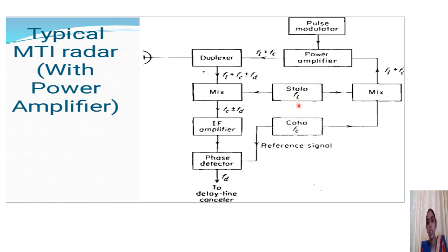We combine FL and FC in a mixer, and the sum frequency FL plus FC is given to a power amplifier and then to a duplexer for transmission.